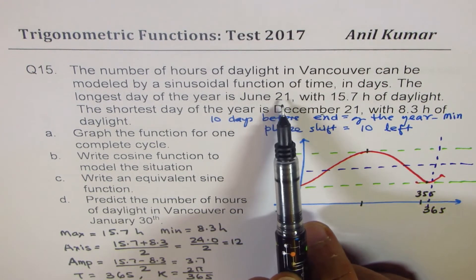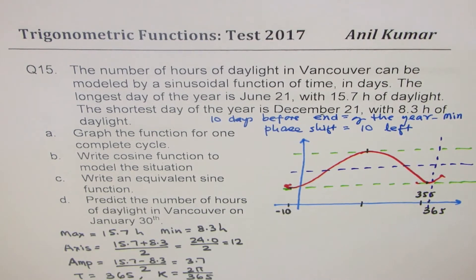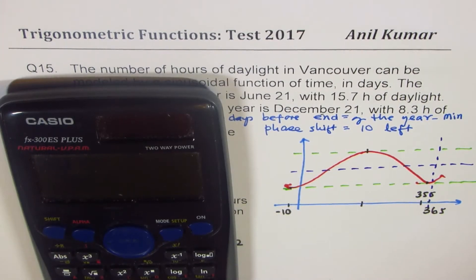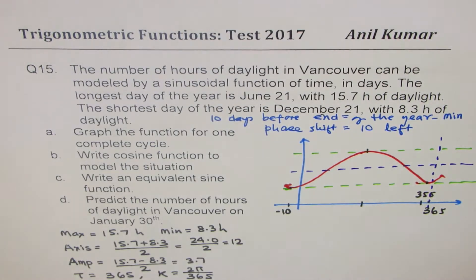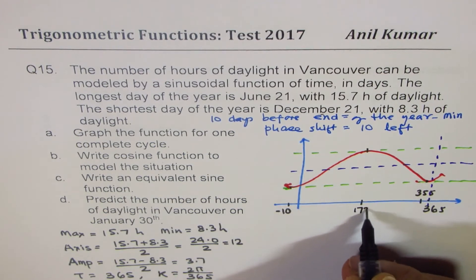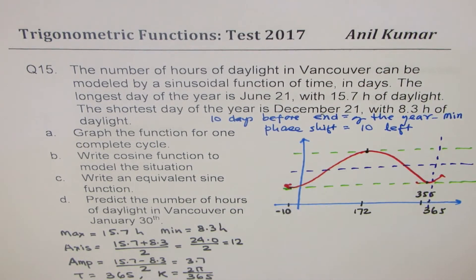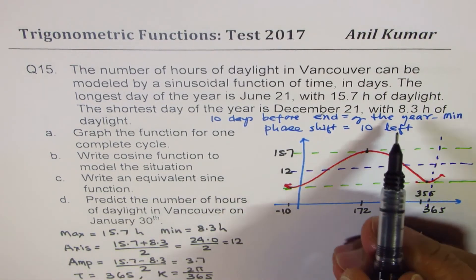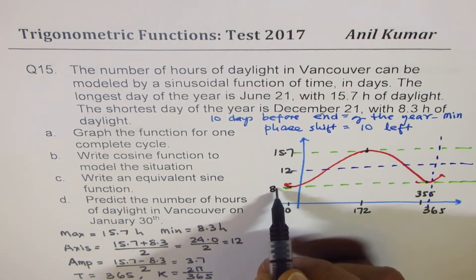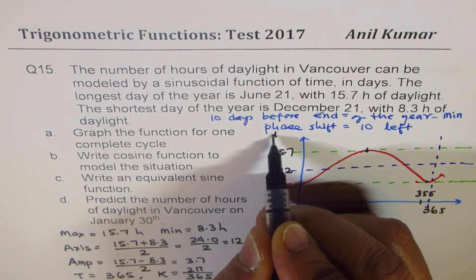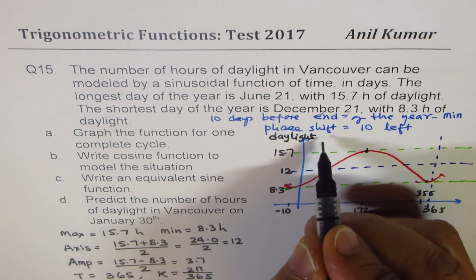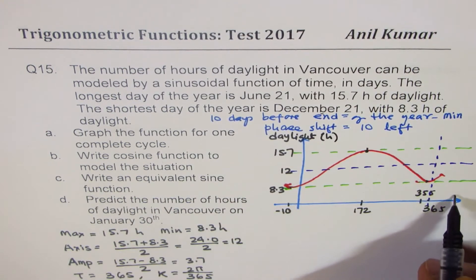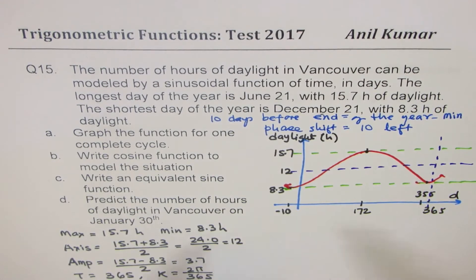You could also calculate these days: 365 divided by 2 gives 182.5, take away 10 gives around 172. So day 172 is the maximum point at 15.7 hours, the axis is at 12, and the minimum is 8.3 hours. The y-axis is daylight in hours and the x-axis is number of days, labeled D.